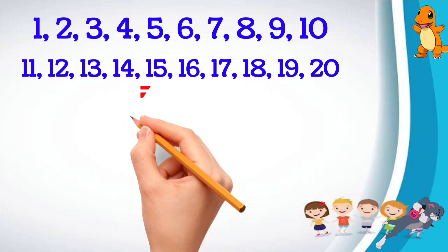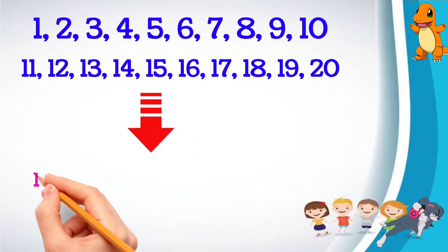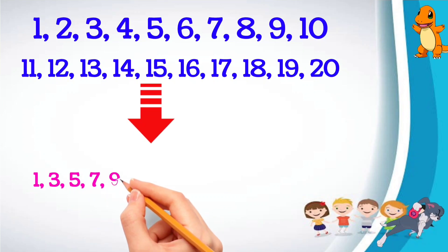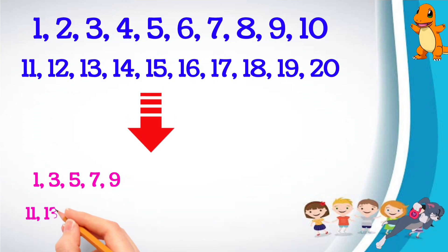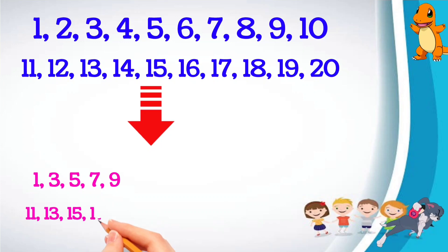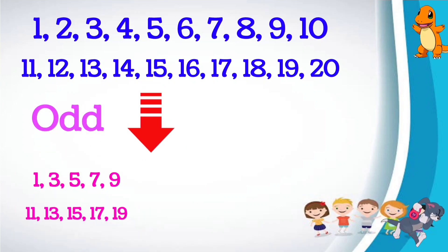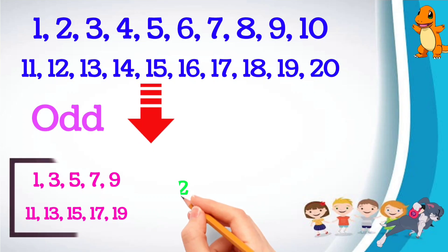The numbers 1, 3, 5, 7, 9, 11, 13, 15, 17, 19 are all odd numbers.